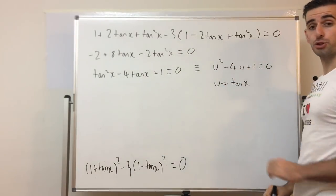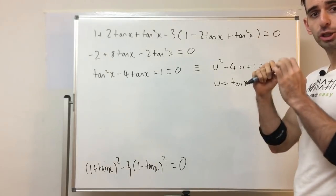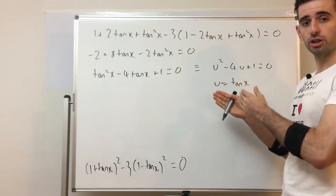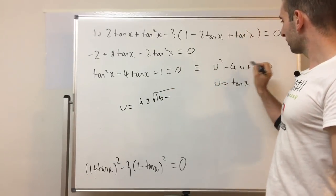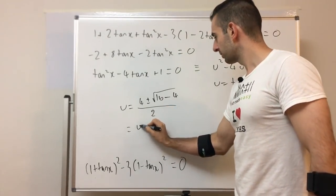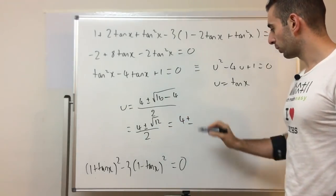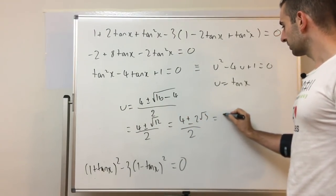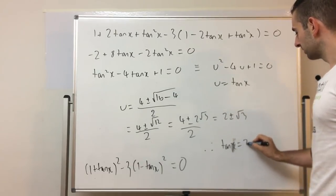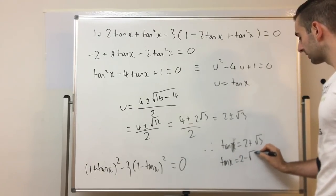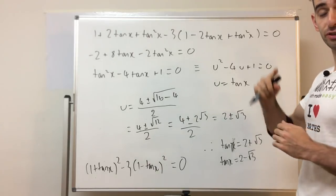Letting u = tanx, that now looks like a quadratic. Can we factorize? No — no integers multiply to 1 and add to −4, so we use the quadratic formula: u = (4 ± √(16 − 4)) / 2 = (4 ± √12) / 2. Simplifying √12 = 2√3, so u = 2 ± √3. Therefore tanx = 2 + √3 or tanx = 2 − √3, and we use the calculator to find those values of x.